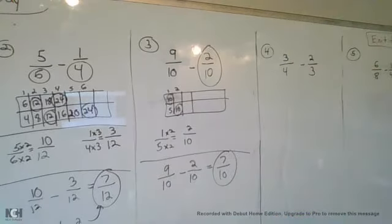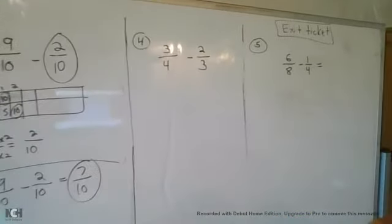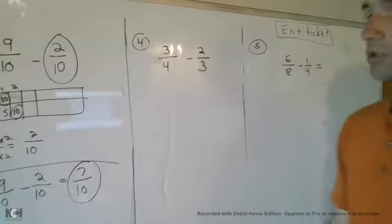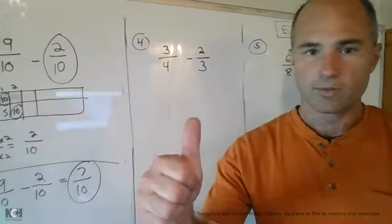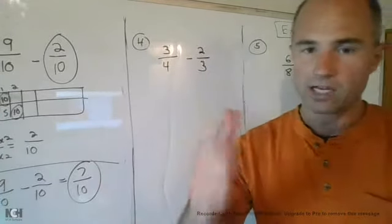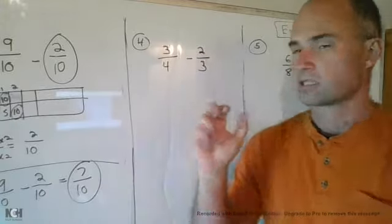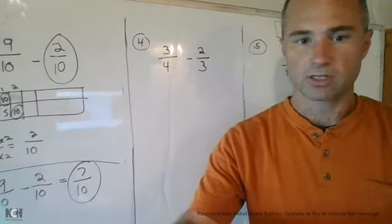Alright, last but not least, before the exit ticket, 3/4 minus 2/3. Find your common denominator, find your equivalent fractions, subtract. Hit the pause button to do that now, please.